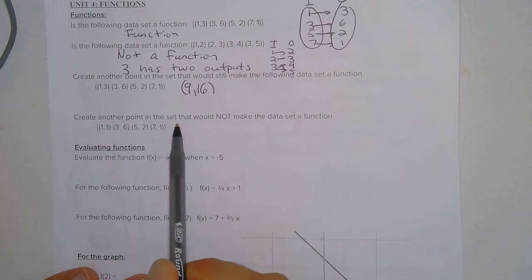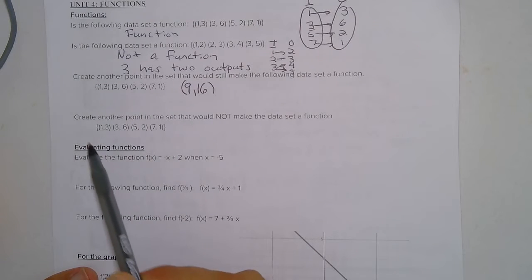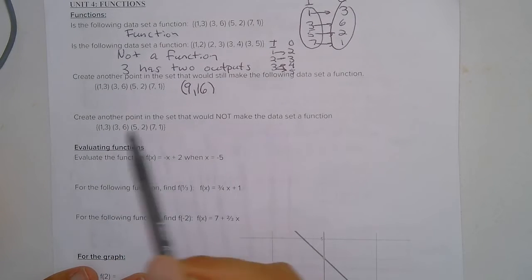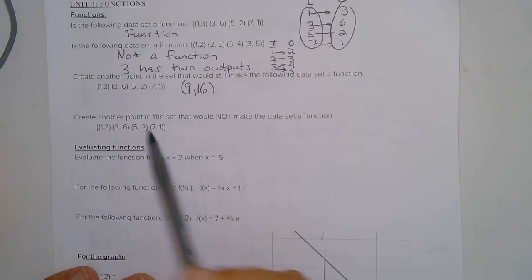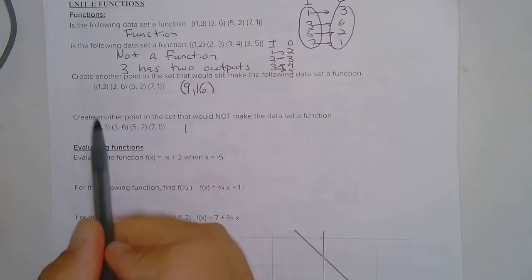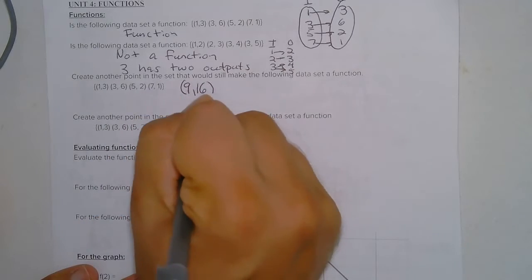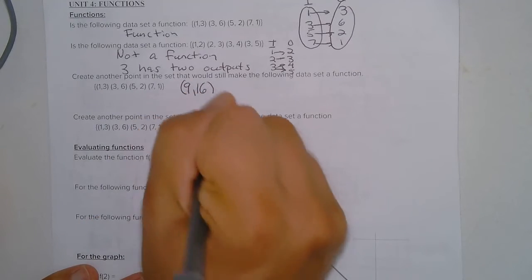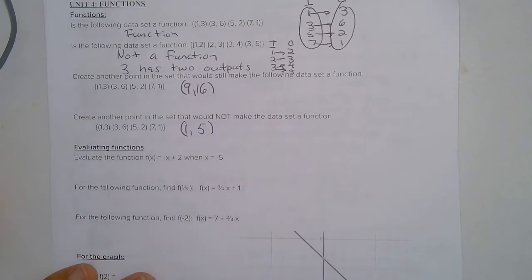Now for this one we have to create another point that is not an output, or that would not make a function. So we need 1 input that has 2 outputs. So I'm going to pick 1 and say 1 outputs to 3, but 1 can also output to 5. And this would make a set that's not a function.